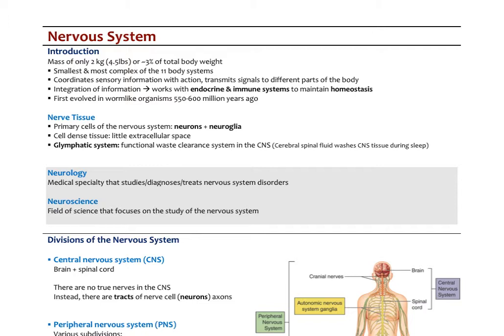The primary cells of the nervous system are neurons — the actual nerve cells — and supporting cells called neuroglia. Neuroglia outnumber neurons by about ten to one, so most cells in nerve tissue are neuroglia, but by mass neurons still comprise the majority. Nerve tissue is very cell-dense with very little extracellular space. There's something called the glymphatic system — a recent discovery — where during slow-wave sleep the spaces between neurons shrink, allowing cerebrospinal fluid to wash through and remove waste products and degraded proteins.